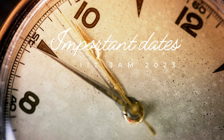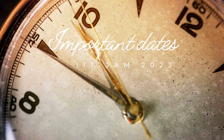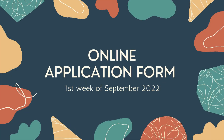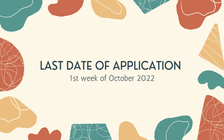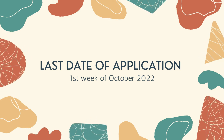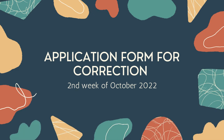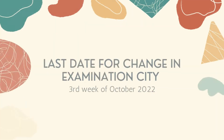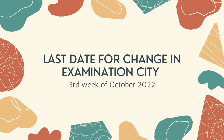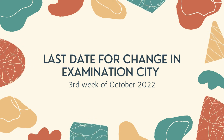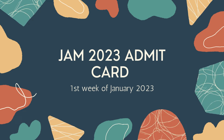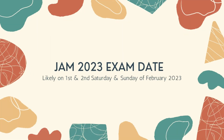Important dates for IIT JAM 2023: IIT JAM 2023 will be conducted by IIT Guwahati. The online application form will be available by the first week of September 2022. The last date of application form submission will be by the first week of October 2022. Application form correction will be available by the second week of October 2022. The last date for change in examination city will be by the third week of October 2022. Admit card will be available for download by the first week of January 2023.